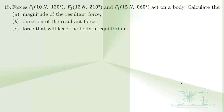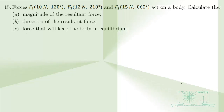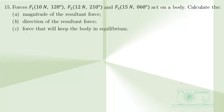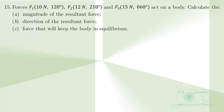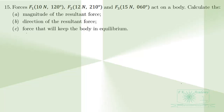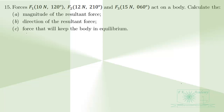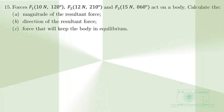We are still solving the WASI 2024 elective mathematics paper 2, question number 15 on vectors and mechanics. Forces F1 of 10 Newtons at 120 degrees, F2 of 12 Newtons at 210 degrees, and F3 of 15 Newtons at 60 degrees act on a body. Calculate the magnitude of the resultant force, the direction of the resultant force, and the force that will keep the body in equilibrium.